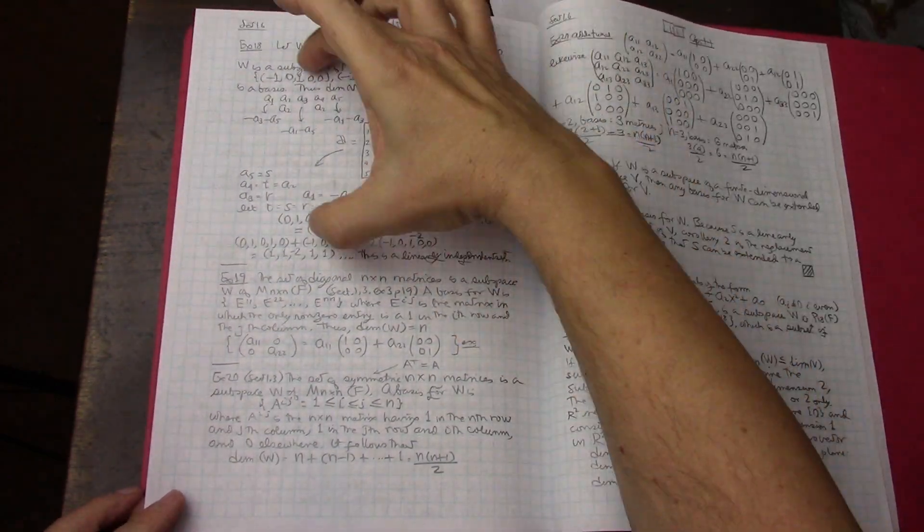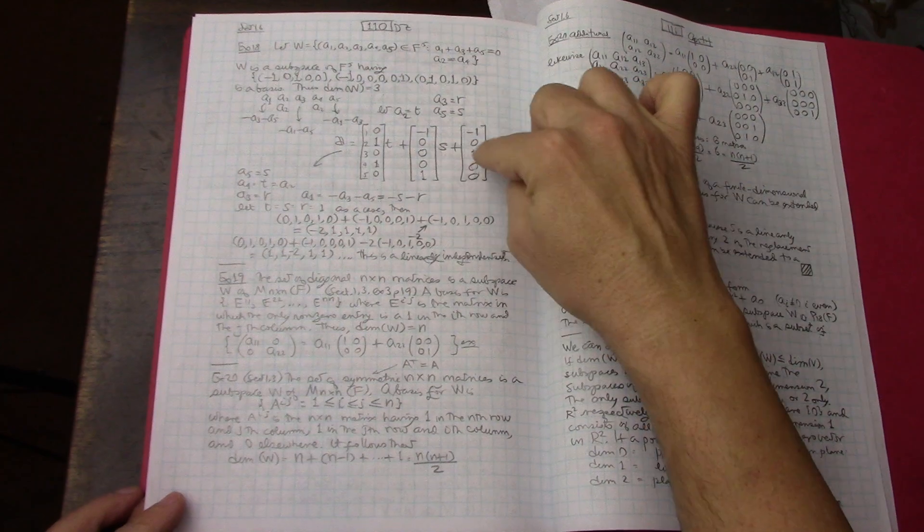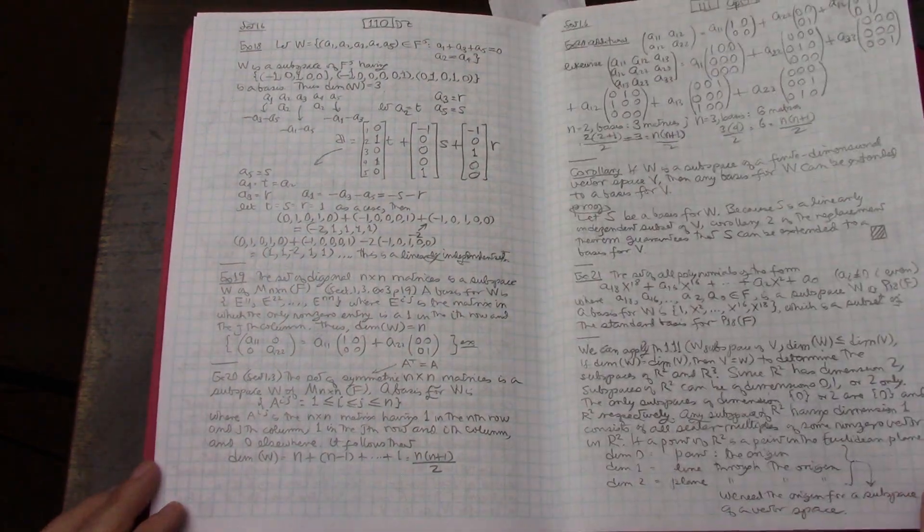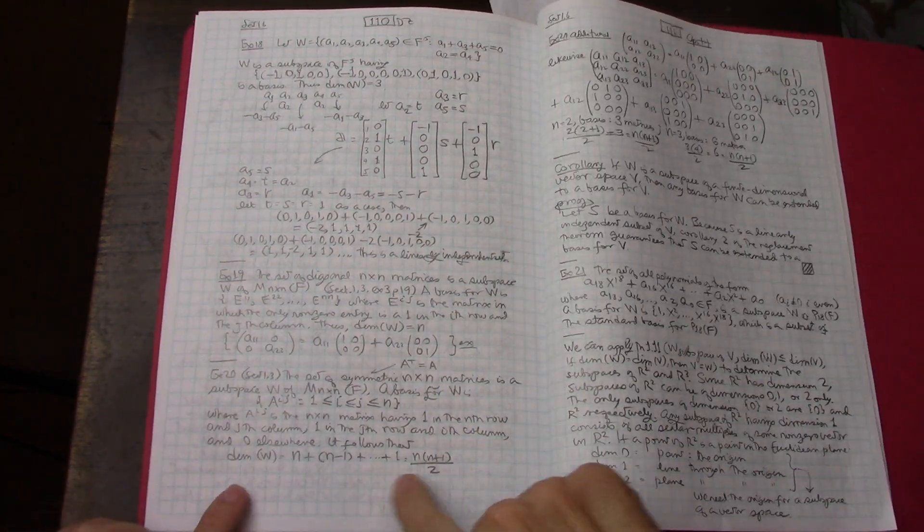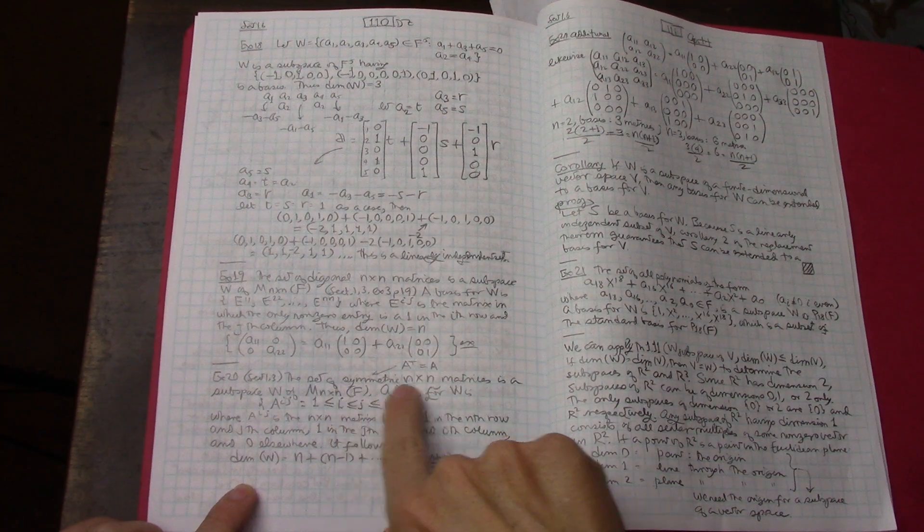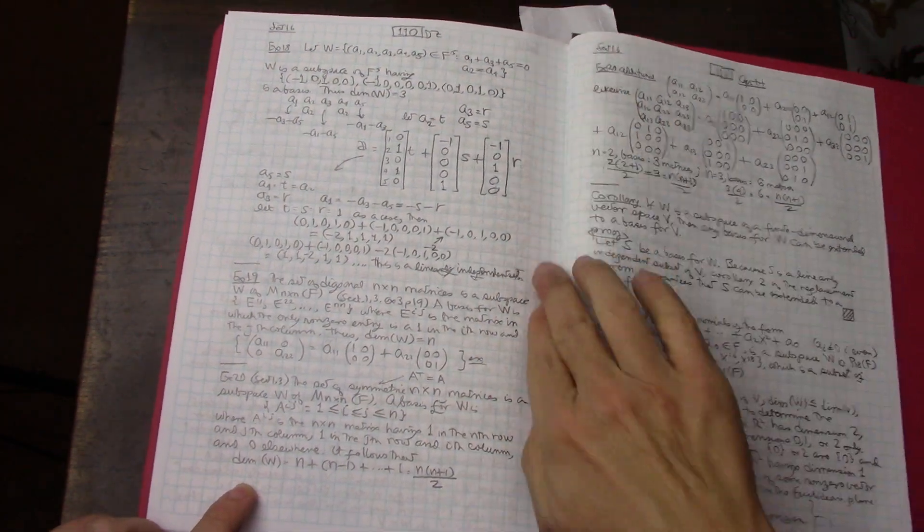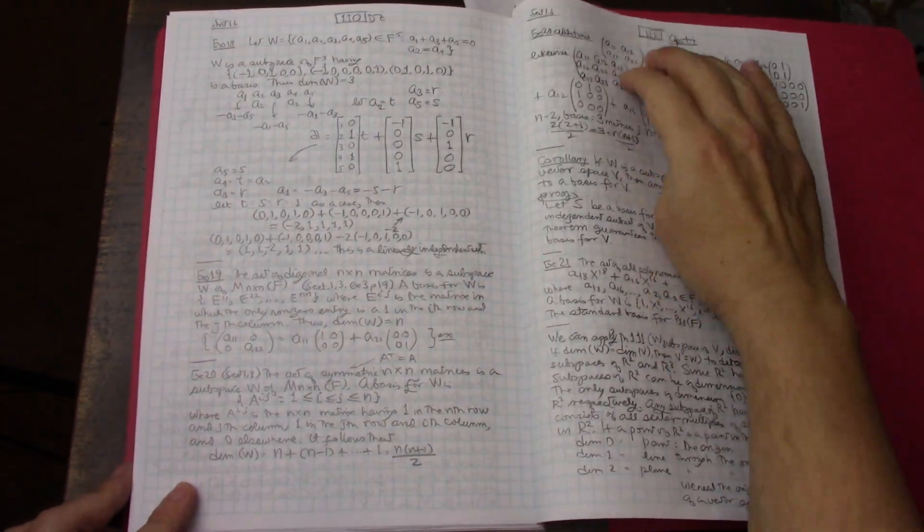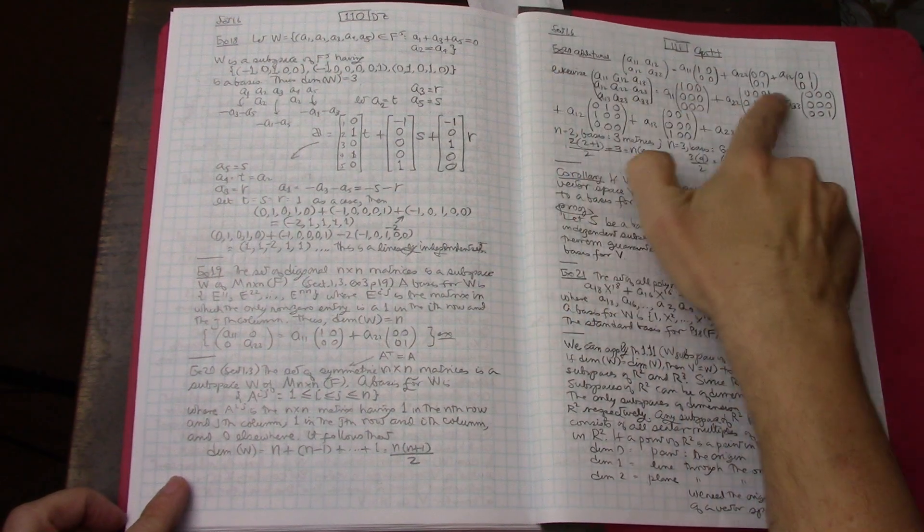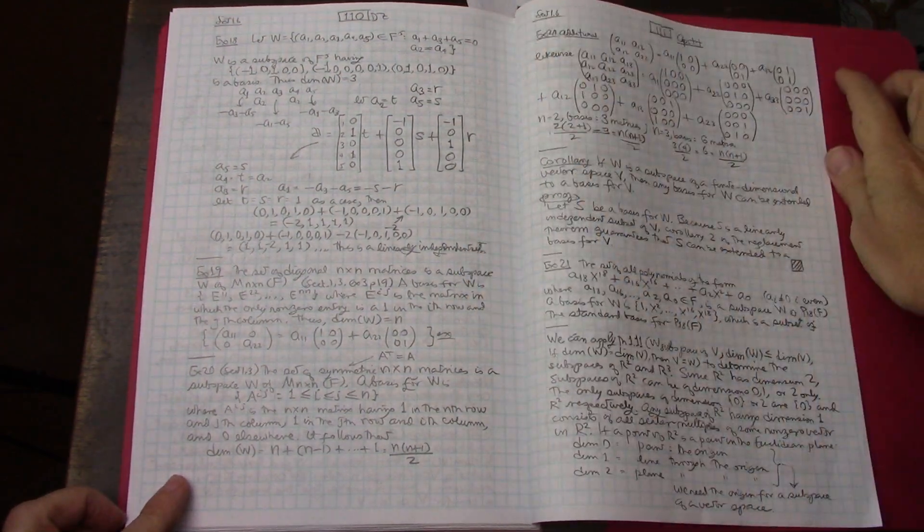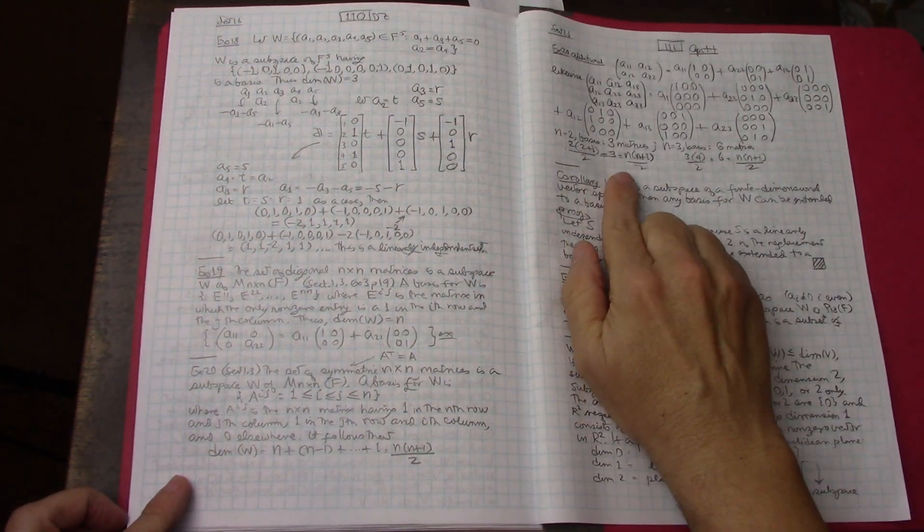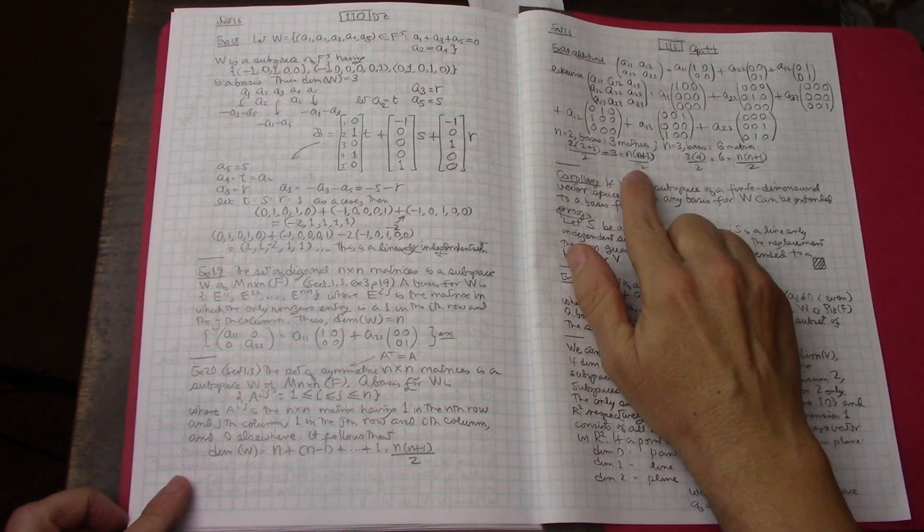Once again working out the example through, just to make sure that I understood what was being done. The same here with the dimension for a symmetric matrix. This is not done in the book, I actually just did it for the cases of two dimension and three dimension, just actually work it out. And sure enough it is n times n plus one over two.